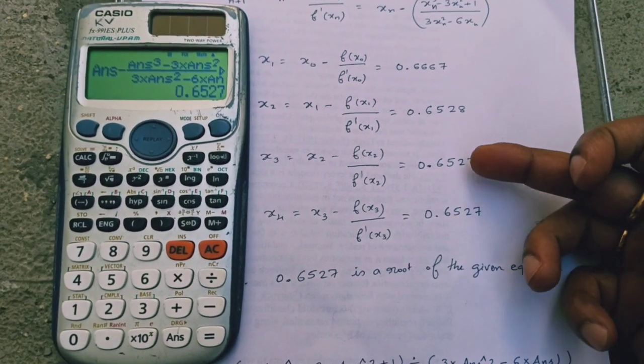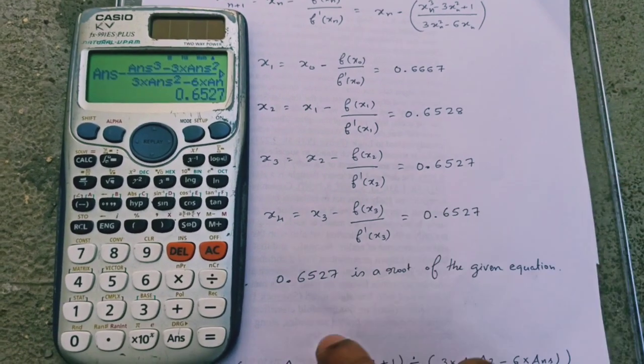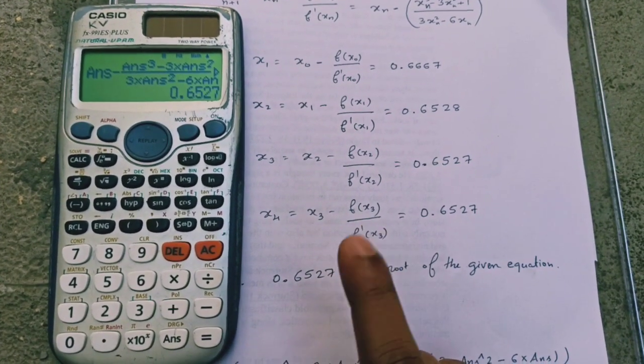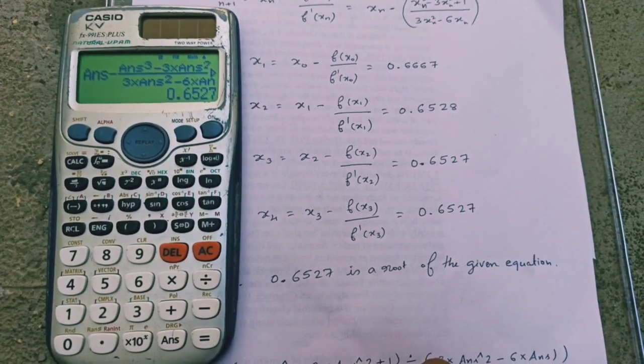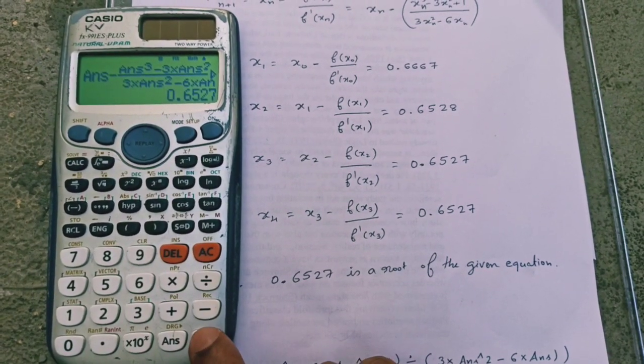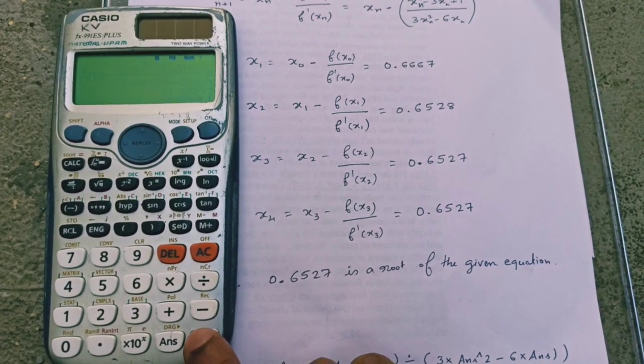Once you got consecutive identical approximations, you are done. So this is the required root near 1. Even if you continue with approximation, you get the same value. You are done. So the answer is 0.6527. This answer is correct up to four decimal places.